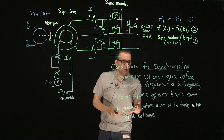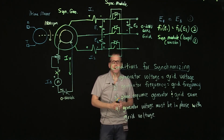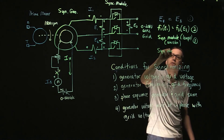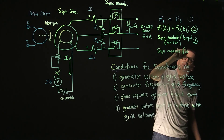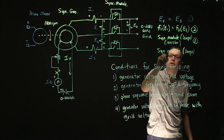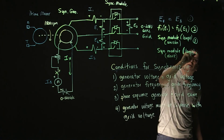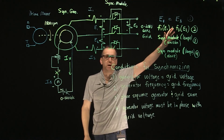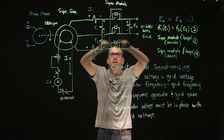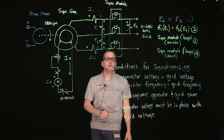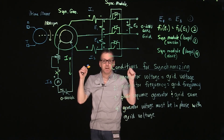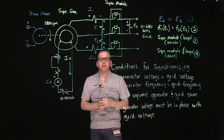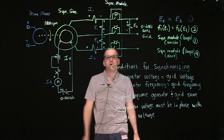For condition number four, the generator voltage must be in phase with the grid voltage. We can also determine this using the synchronizing module lamps, except now we are looking at when the lamps are dark. When the lamps are dark, the two voltages are in phase, there is zero volts across the switch, and we can close the switch to synchronize the two systems. You should see a nice slow beat frequency, voltages should be equal, generator frequency slightly higher, and when the lamps are dark, close the switch on the synchronizing module.